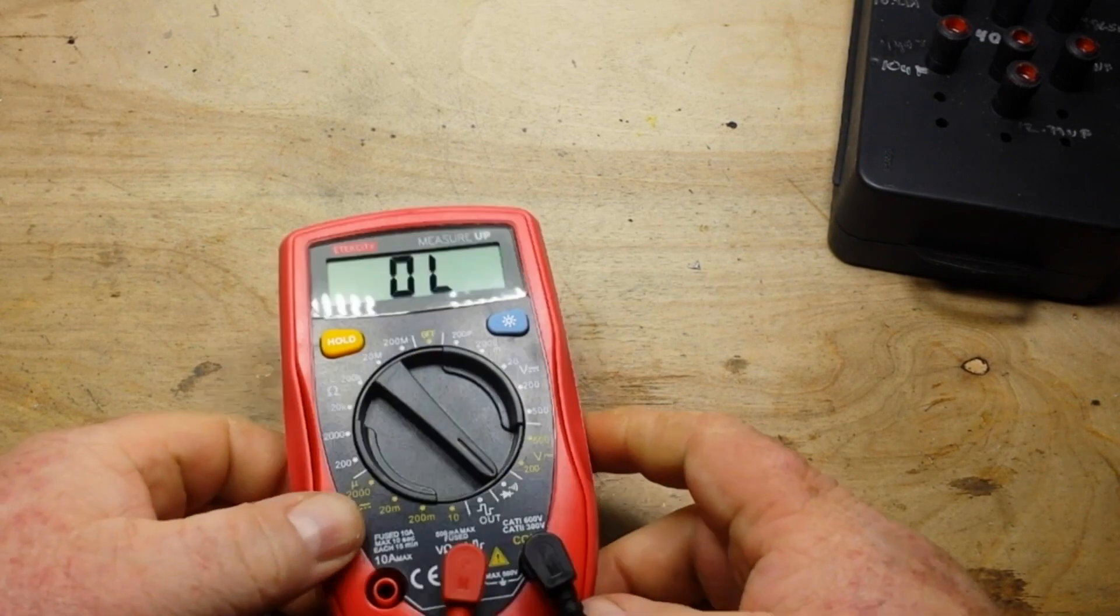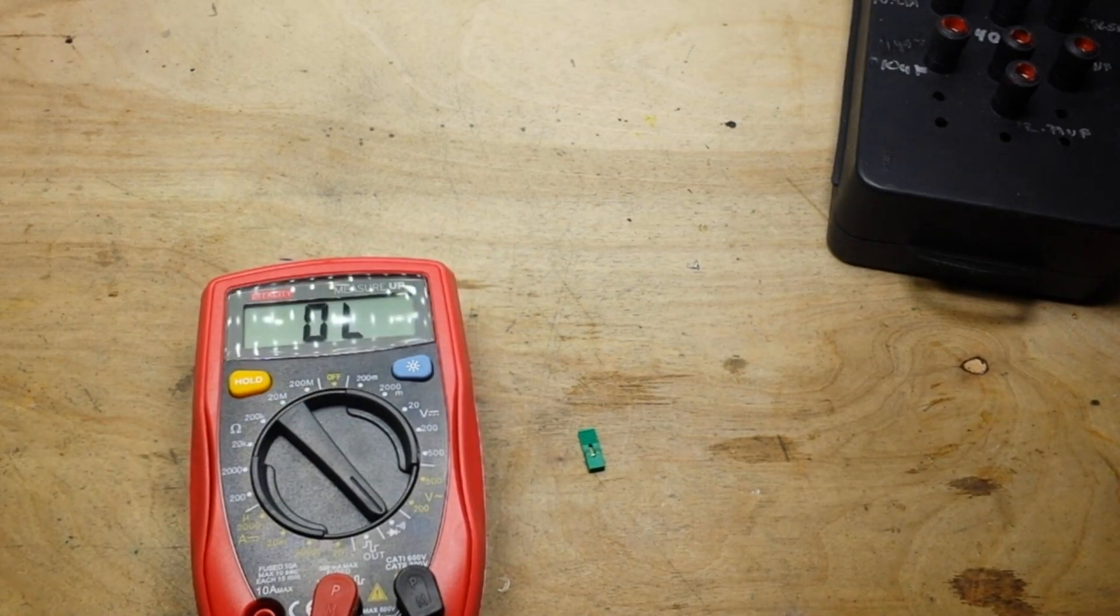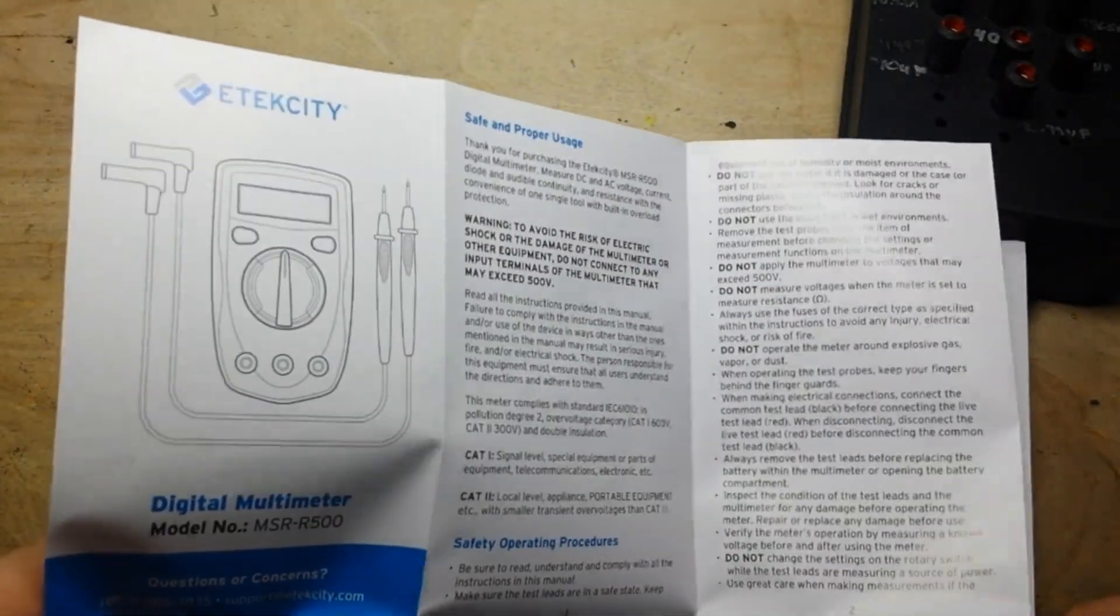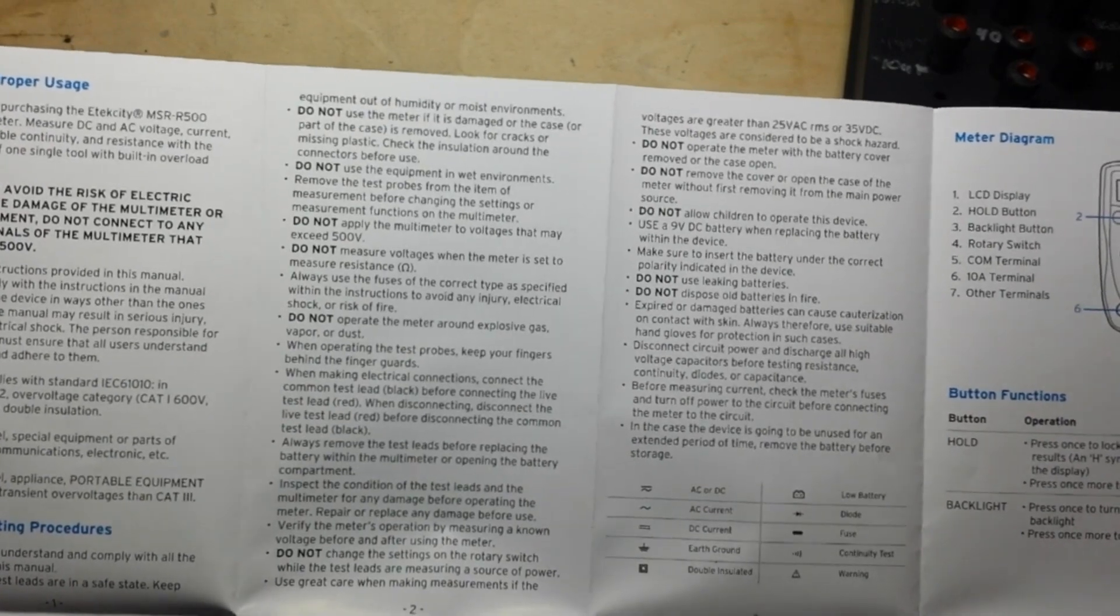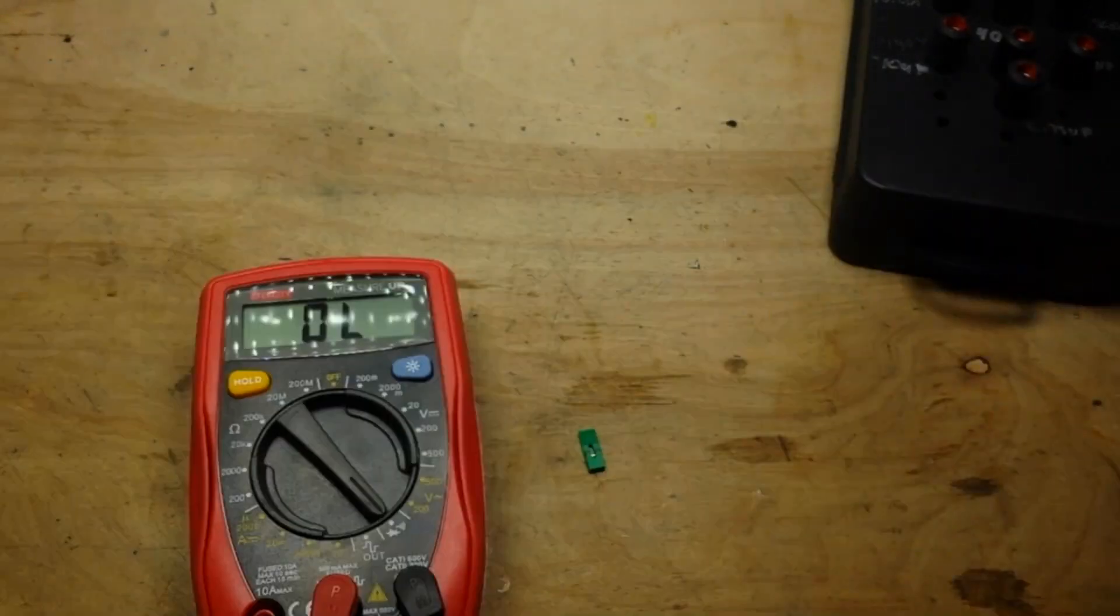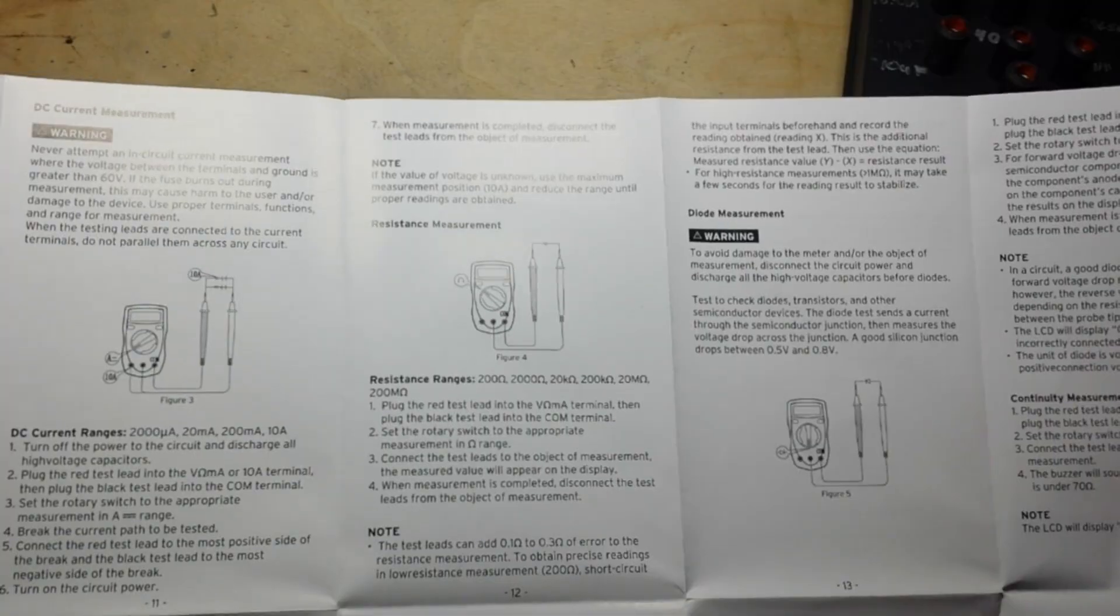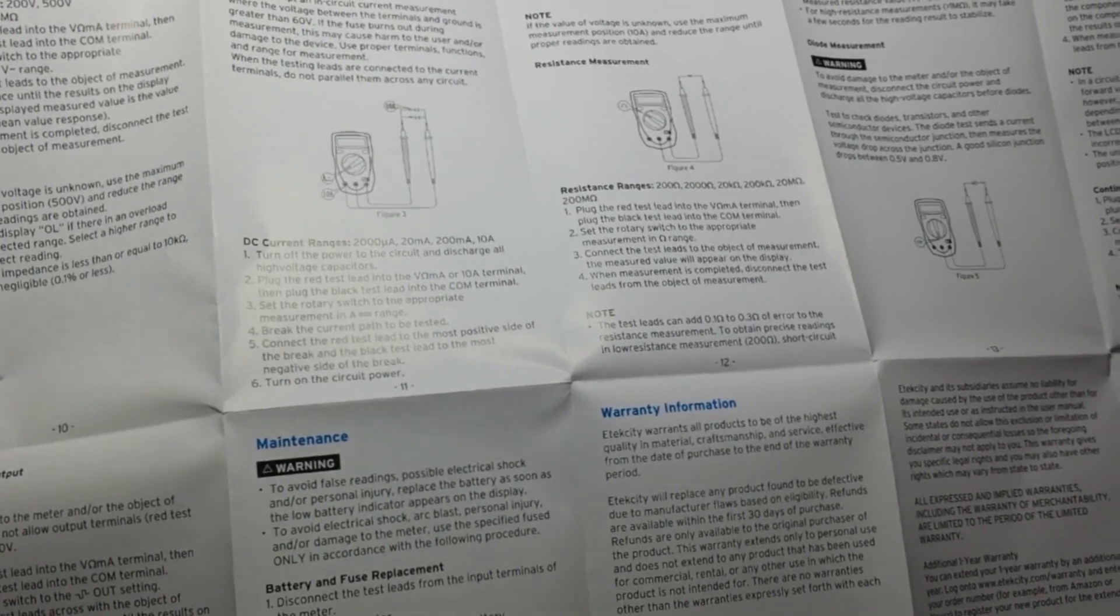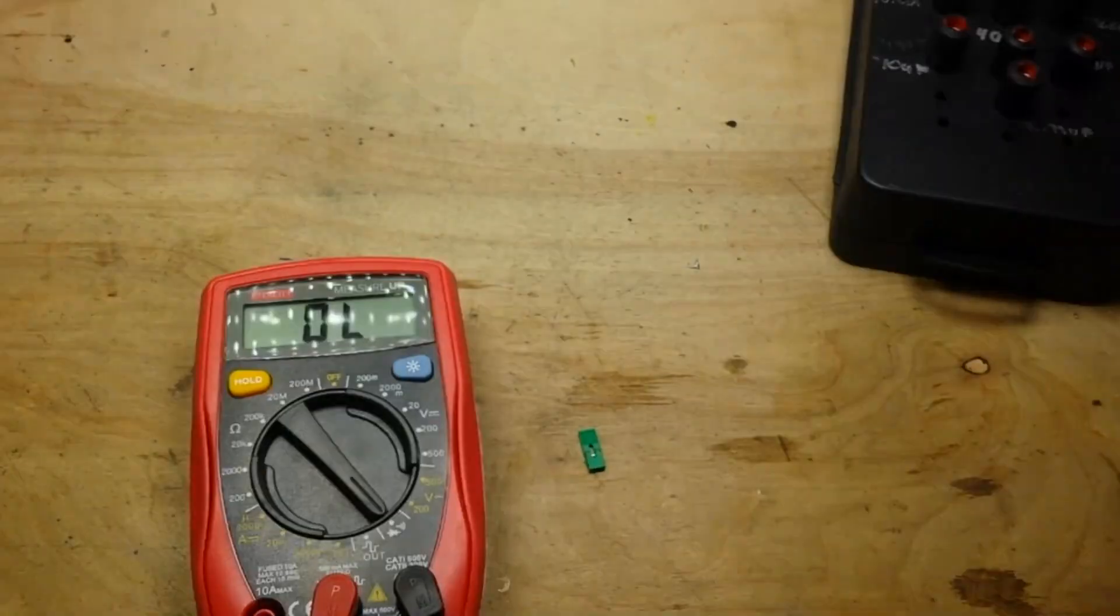Now this doesn't do AC current. Not going to worry too much about DC current, but it does appear to have a function as a square wave generator or a pulse generator. Square wave output, 50 hertz. So it's just going to give us a 50 hertz signal. All right.